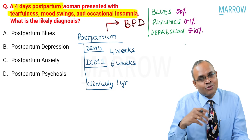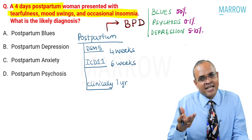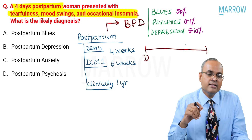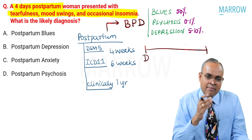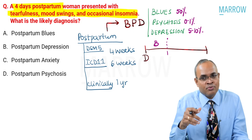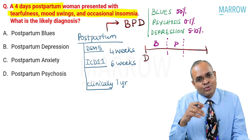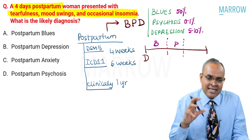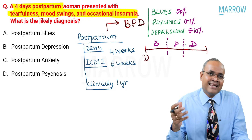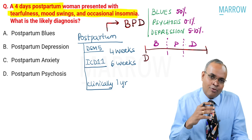Psychosis is rare but quite severe. Depression is common in about 5 to 15% of women who deliver. Regarding timing: postpartum blues typically happen within the first one to two weeks and resolve on their own. Psychosis mostly presents acutely around the second week and can be severe. Depression generally comes a little later than both blues and psychosis.